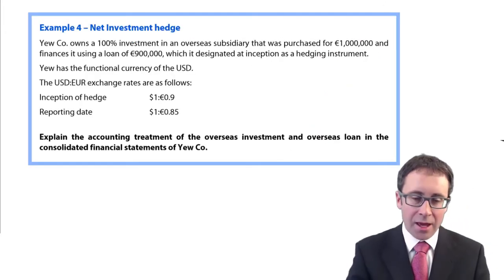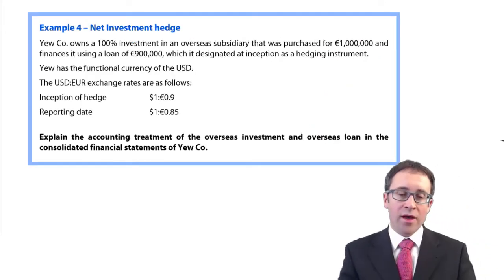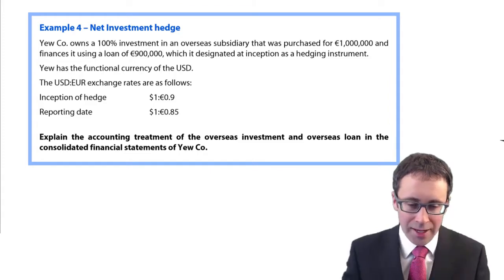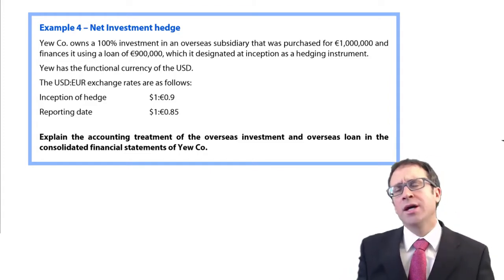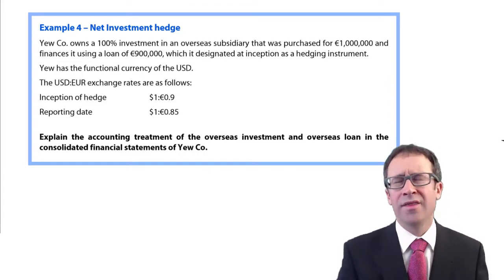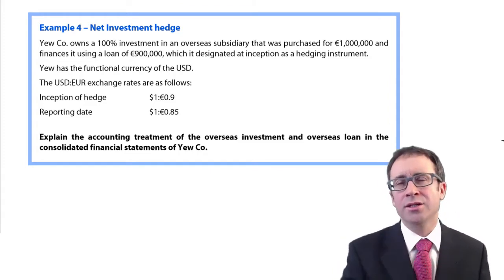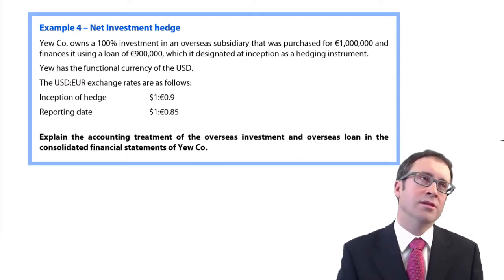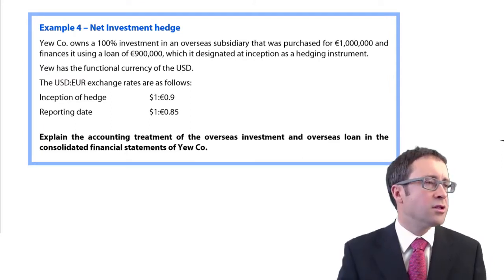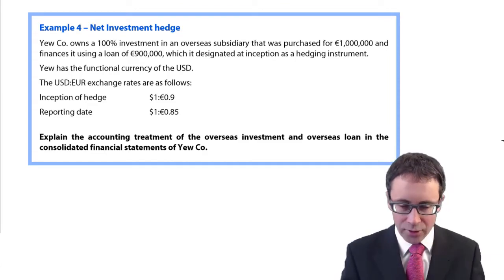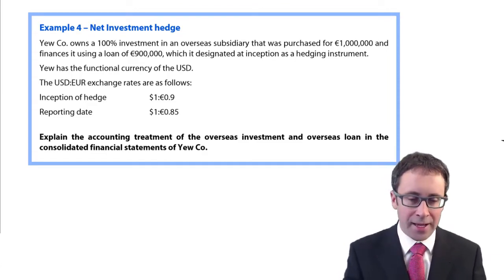The key point is: you have an overseas subsidiary, those net assets need to be translated at the closing rate every year, giving gains or losses. To mitigate those, we take out a hedging instrument — an overseas loan. I've tried to keep the example as straightforward as possible, though things may change as you work through the study text and revision kit.